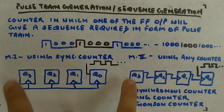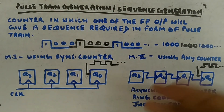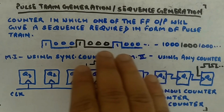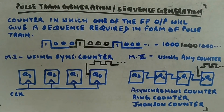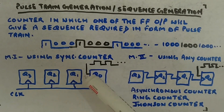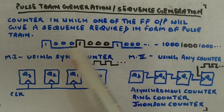There are two methods to do this. One is using a synchronous counter, and the other is using any type of counter — asynchronous, ring counter, Johnson counter (also called twisted ring counter), BCD, gray code, or any counter — to get the required sequence. In synchronous counters, clocks are given at the same time. In asynchronous counters, clocks are in asynchronous fashion, and typically Q0 gives the required pulse train.